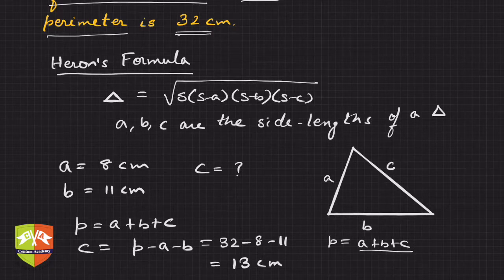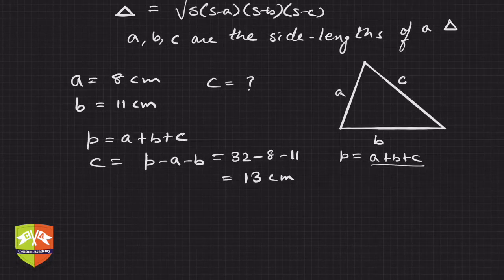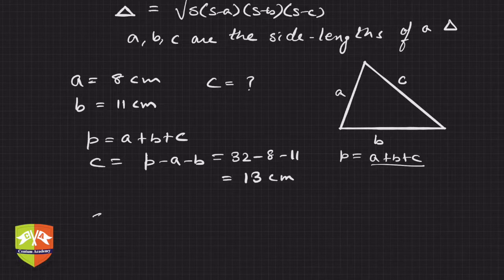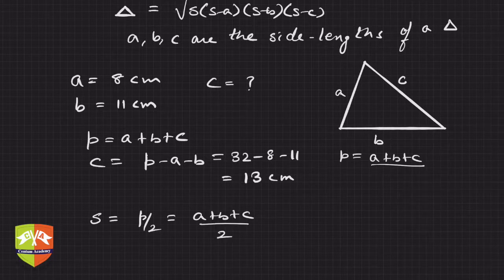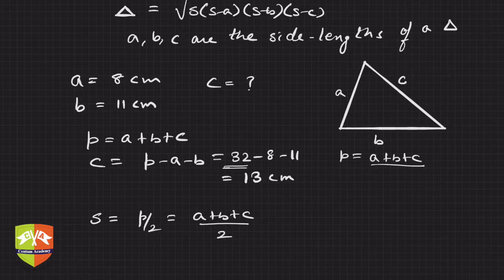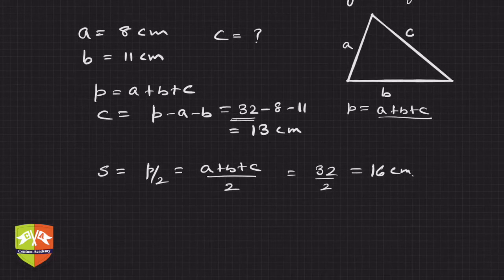Now simply deployment of formula and finding out the result. What is s? S is p upon 2, semi-perimeter, that means a plus b plus c by 2. Now perimeter was already given and that was equal to 32, so hence it will be 32 upon 2 which is 16 centimeter.